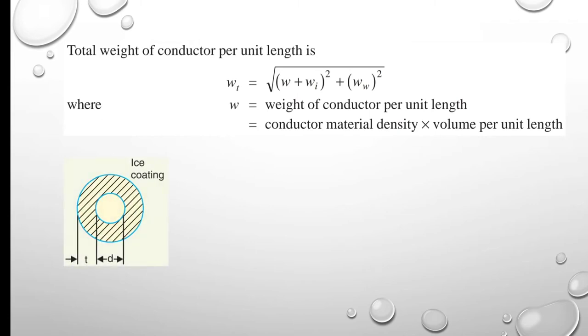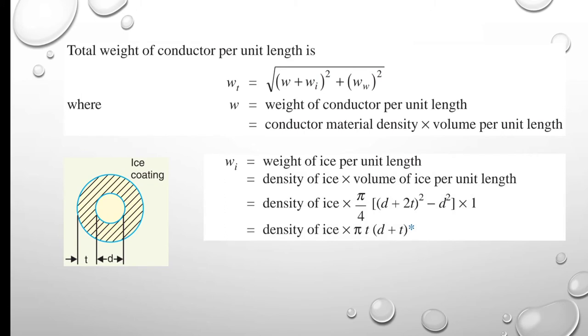In the diagram, we can see the ice coating with thickness T. Wi is the weight of ice per unit length, equal to density times volume of ice per unit length.